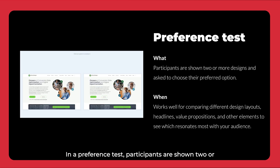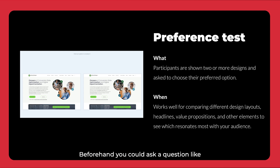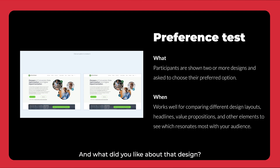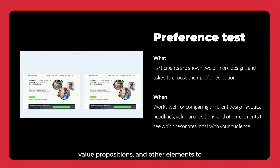In a preference test, participants are shown two or more designs and asked to choose their preferred option. Beforehand, you could ask a question like: which design is easier to understand? After the participant selects a design, ask follow-up questions like: What specifically about this design did you prefer over the others? And what did you like about that design? Preference tests work well for comparing different design layouts, headlines, value propositions, and other elements to see which resonates most with your audience.